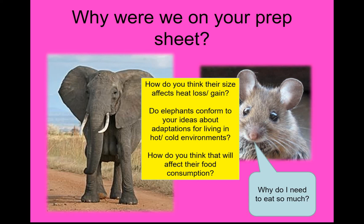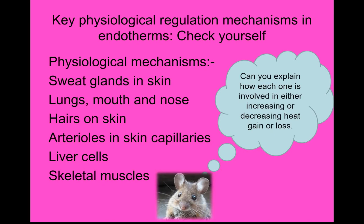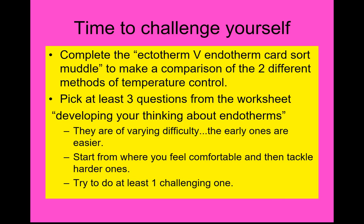Think about where these animals live — hot climates, burrows to survive cold nights. Lots of ideas and adaptations to consider. When you're looking at questions, think about the relevant structures and processes: lungs, mouth, nervous system, evaporation, sweat glands, water, latent heat of vaporization, hairs on the skin — massive insulation in other animals because they trap air. Remember your arterioles in relation to skin capillaries, liver cells for respiration, and skeletal muscles — always think about those when considering endotherms.